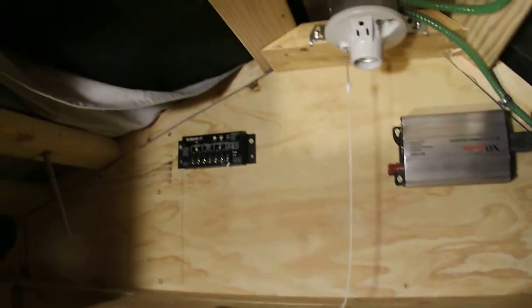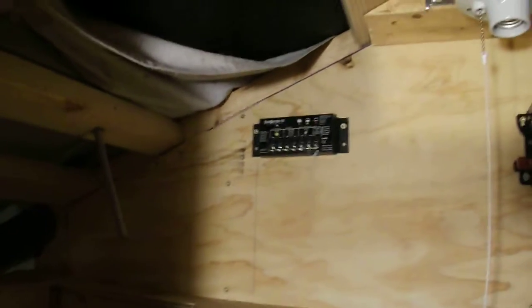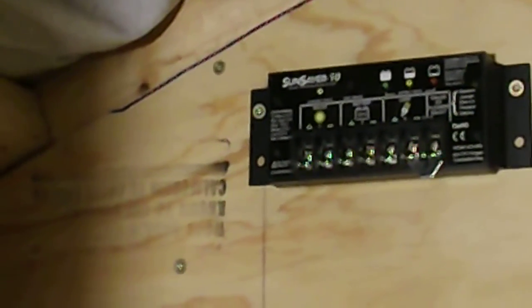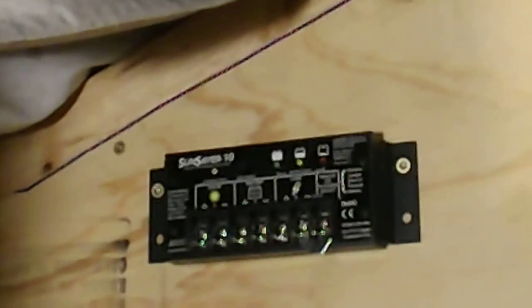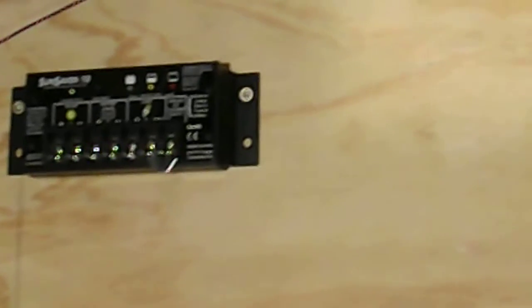To the right of that area is a Morning Star Sun Saver 10 amp charge controller. To the right of that is a 600 watt 1000 surge inverter. That's going to be plugged into my ground fault directly.